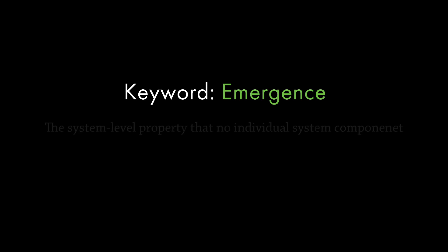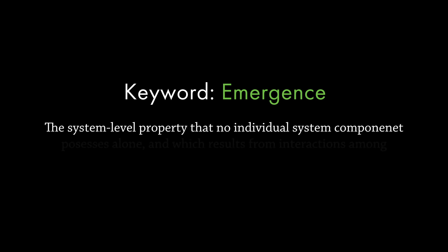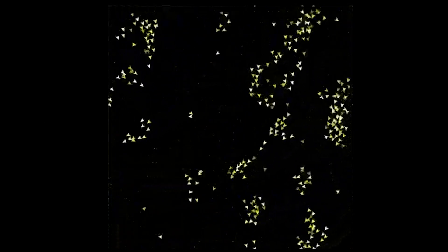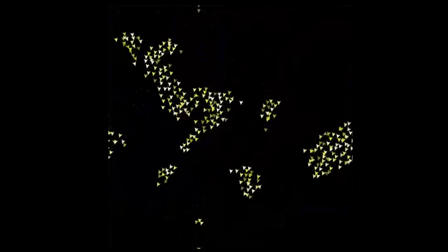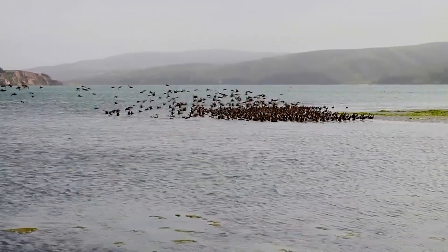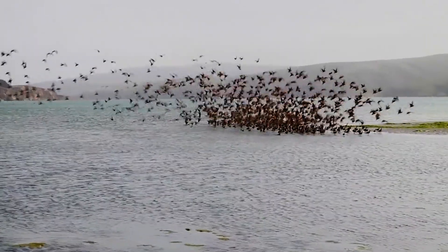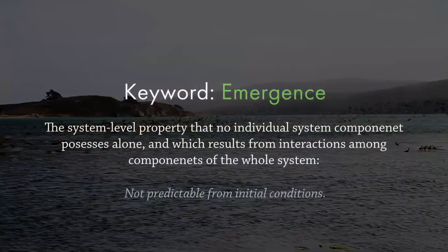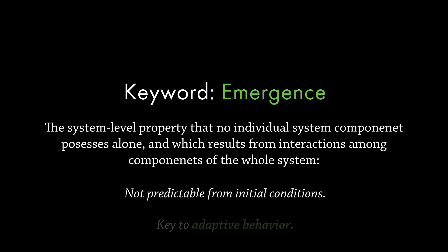Speaking of emergence, we can define it as the system-level property that no individual system component possesses alone, and which results from interactions among components within the whole system. Going back to the Boids model applied to flocking behavior — beginning with agents randomly distributed in space and equipped with two simple behavioral rules, coherent flocking behavior emerges through continual interactions among agents in which each individual gradually adjusts its distance and orientation to its nearest neighbors. Importantly, the resulting flocking behavior is not predictable from initial conditions. Only once the agents interact with one another can higher-order behaviors emerge. Emergence is a defining trait of complex systems and an essential ingredient for adaptive behavior.